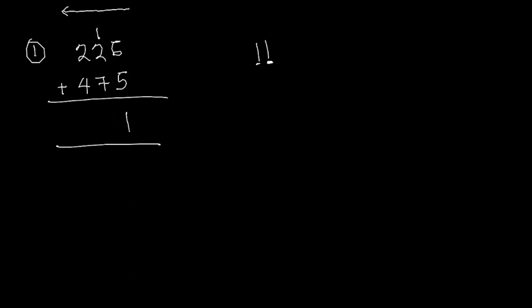We bring that carried one to the top of the tens column. Now we have 1 plus 2, which is 3, plus 7, equal to 10. I write the zero and send the one to the next column. So 1 plus 2 is 3, plus 4 is 7. My answer is 701.